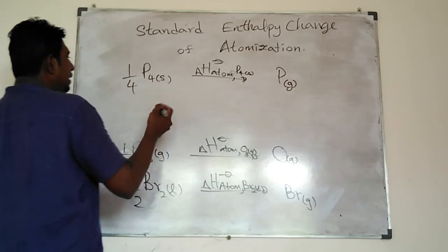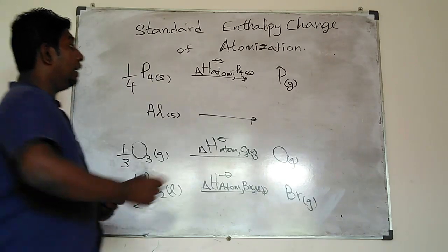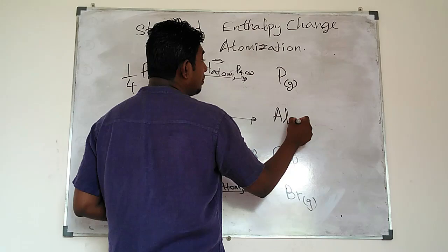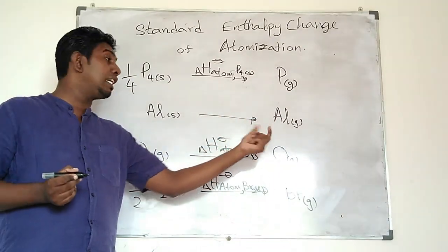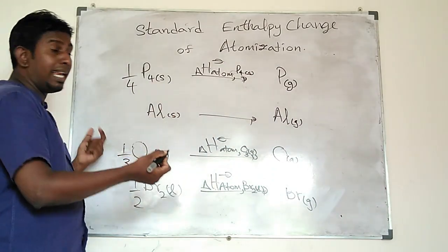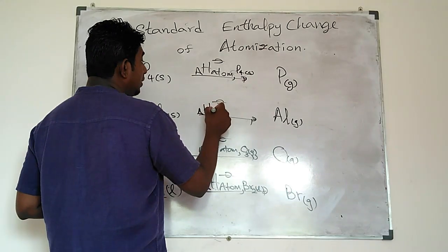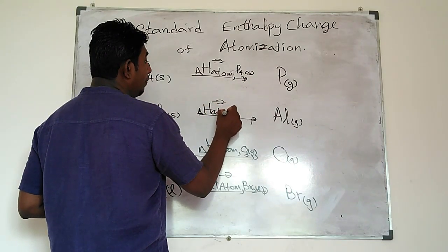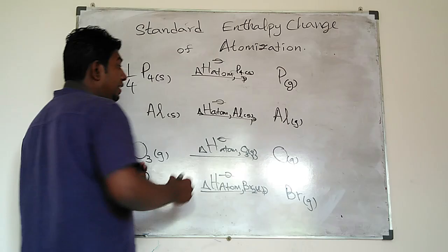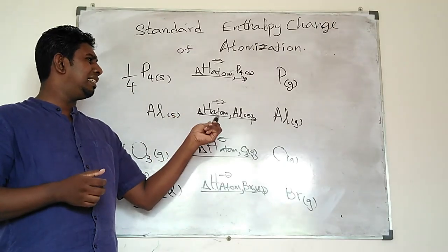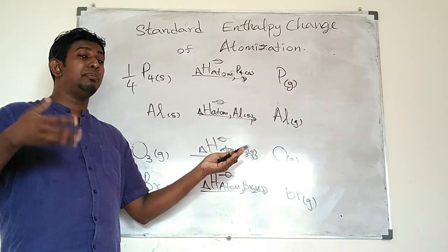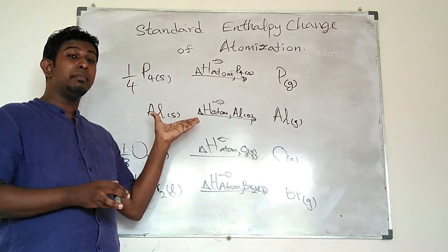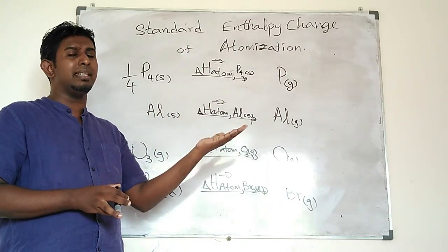Further, when it is a metal — let's say aluminium solid — the standard enthalpy change of atomization of aluminium solid is the formation of aluminium gaseous atoms. The equation is already balanced since aluminium is monatomic. For species like that, you might notice the similarity: it is similar to the standard enthalpy change of sublimation of aluminium solid. Sometimes these can be the same.